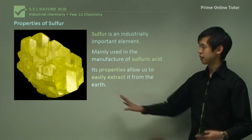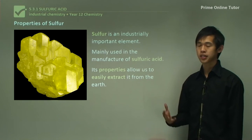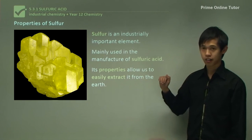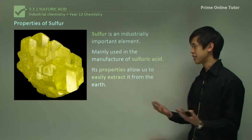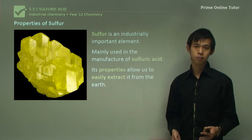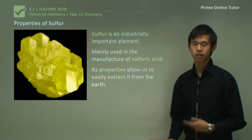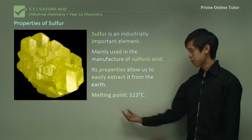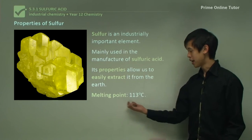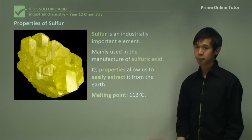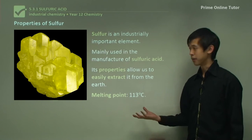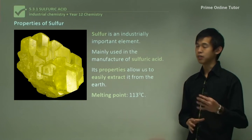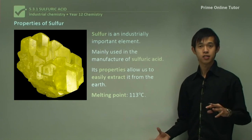The properties of this sulfur crystal actually allow us to easily extract it from the earth, so we'll go through each of the really important ones and explain why they help us get it out of the ground. The melting point of sulfur is about 113 degrees Celsius, which is quite low for an element or crystal. Keep all of these properties in mind as we talk about the Frasch process in a few slides' time.